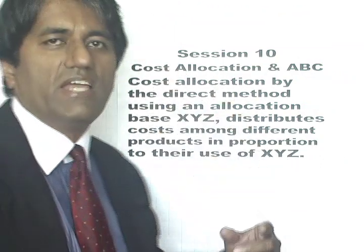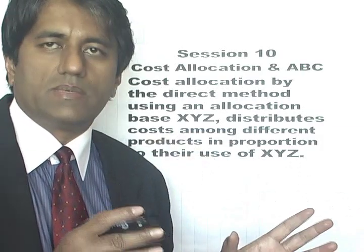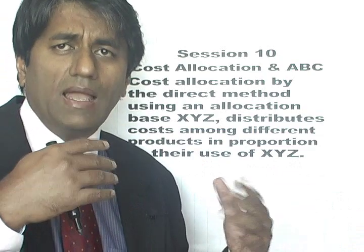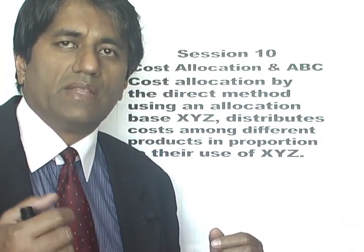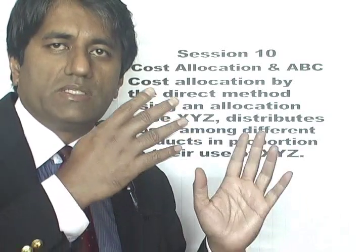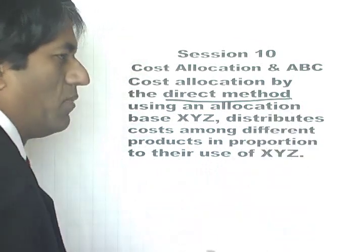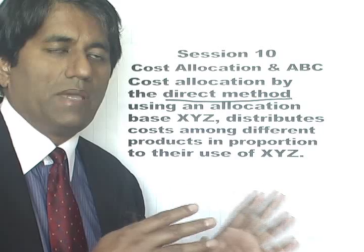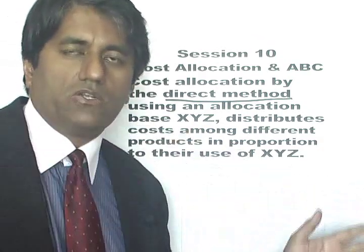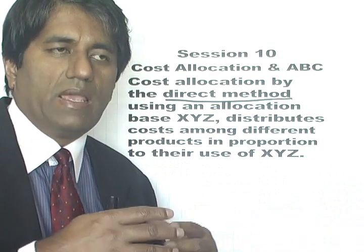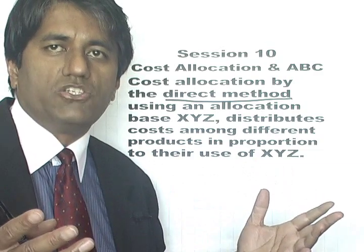Session 10 is Cost Allocation and Activity-Based Pricing. If you have a firm which has different products and also some service departments which are not exactly producing a product but provide services to the production units, then the question arises: how are the costs of these service departments to be allocated to the production units? The direct method says allocation is going to be according to a base criteria — that could be the amount of floor space used by a production unit or the number of employees each production unit has.